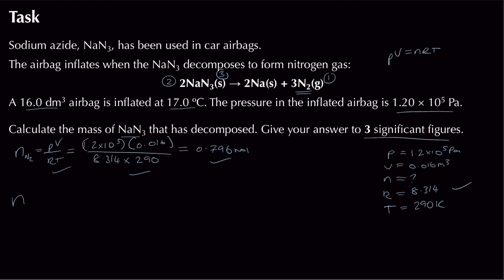The fifth mark comes from using stoichiometry. The balanced equation shows a 3:2 ratio of N₂ to NaN₃. Divide by 3 to find 1 part, then multiply by 2: (0.796 / 3) × 2 = 0.531 moles of sodium azide.